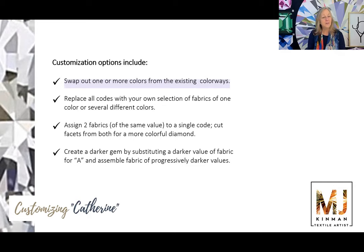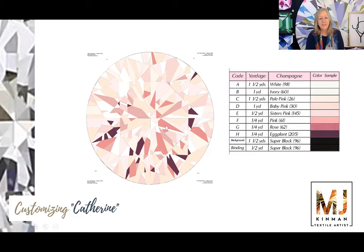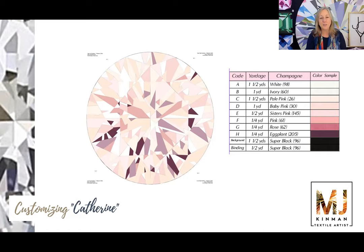Here are some of the things you could do to customize your Catherine pattern. The first one is to swap out one or more colors from the existing colorways. For example, if you were working on the champagne gemstone and you said, 'I like this rose color right here — the G code — but I think I want that to be a little bit more lavender,' you could make that switch. You'll see the different personality it gives the gemstone. Just by switching out one color, you can change the personality of the gem.